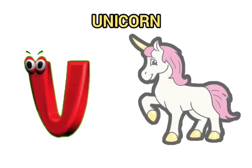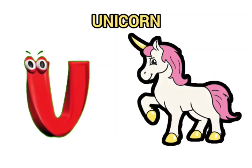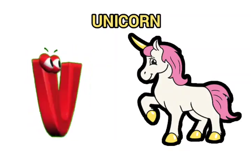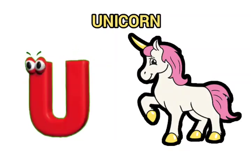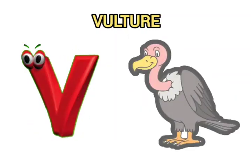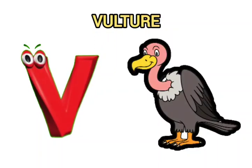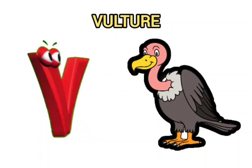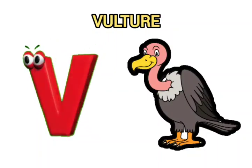U is for unicorn, unicorn. V is for vulture, vulture.